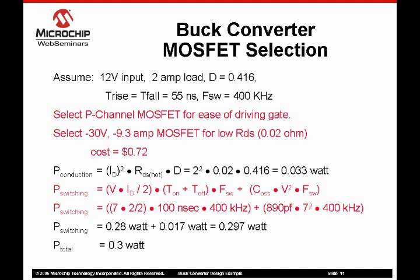If a 20-volt MOSFET were used, it would be good design practice to incorporate a voltage clamp from the gate driver circuit. Here, a 30-volt device was selected on the basis of the 20-volt gate-to-source specification. The device current rating is more than necessary, but the low RDS(on) specification minimizes temperature rise. Most small surface-mount packages have a thermal resistance of about 50 degrees Celsius per watt. With a calculated power dissipation of 0.3 watts, the MOSFET should experience a temperature rise of only 50 degrees C.